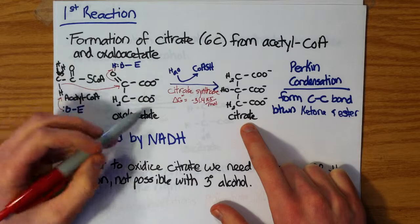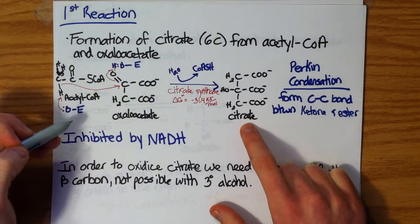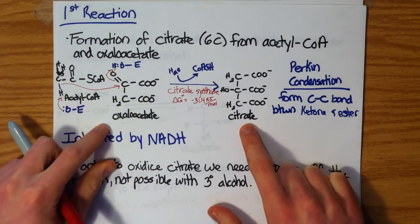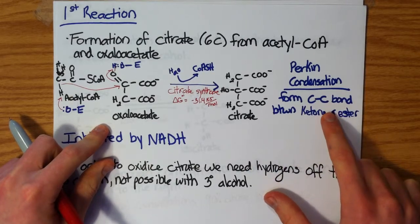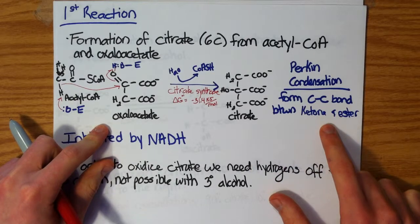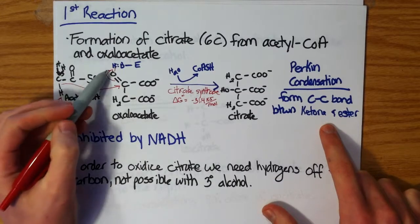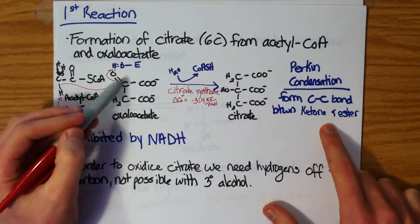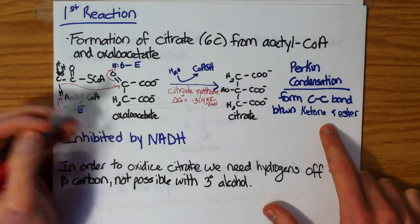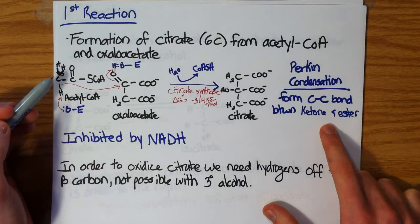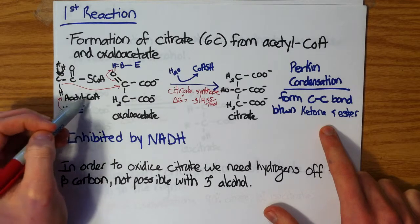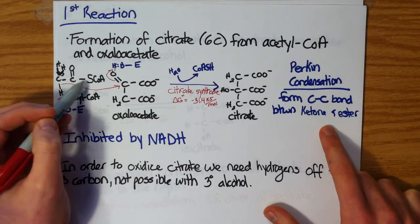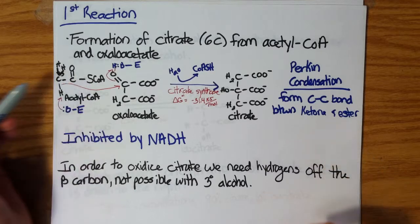The enzyme mechanism is analogous to that of a Perkins condensation, where a carbon-carbon bond is formed between a ketone and an ester. Here, our ketone group is the carbonyl group off of oxaloacetate, and our ester compound is played by the acetyl-CoA with this carbonyl carbon attached to the thiol-coenzyme A.